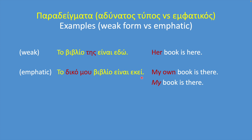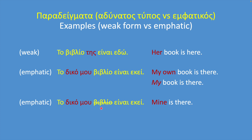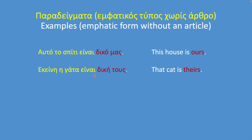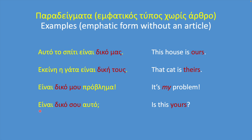Do you see the contrast? Her book is here, but my book is there. And if you want, you can leave out the noun: το δικό μου είναι εκεί — mine is there. You can also use the emphatic type without an article, like in these examples: αυτό το σπίτι είναι δικό μας — this house is ours; εκείνη η γάτα είναι δική τους — that cat is theirs; είναι δικό μου πρόβλημα — it's my problem; είναι δικό σου αυτό; — is this yours? Όχι, δεν είναι δικό μου — no, it's not mine.